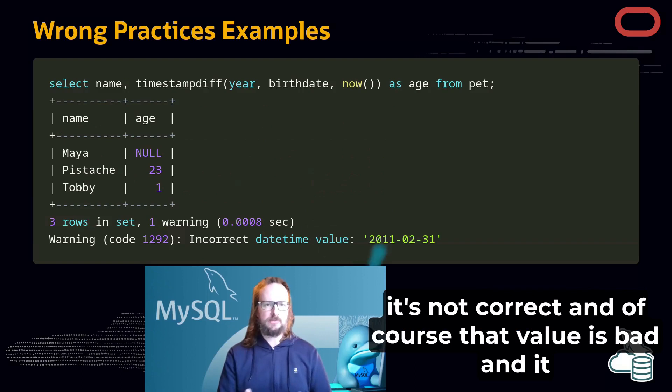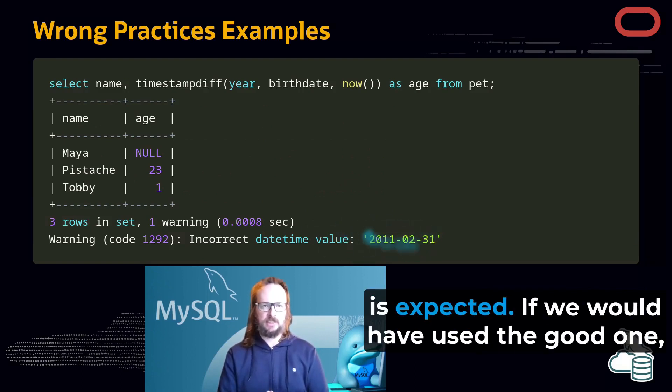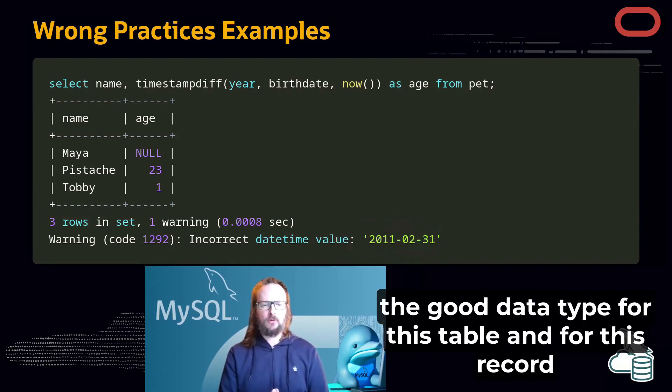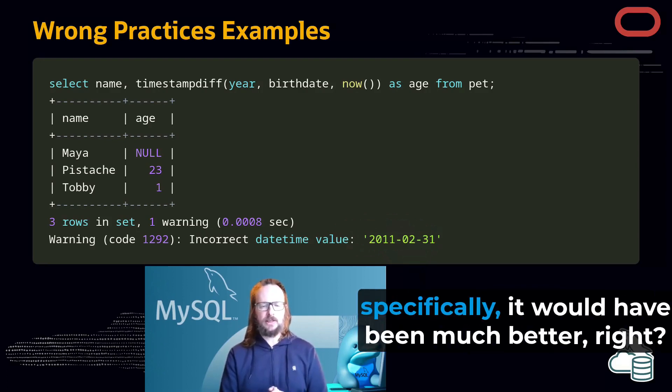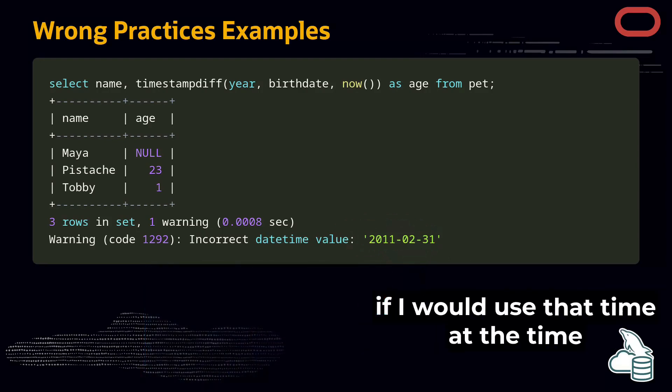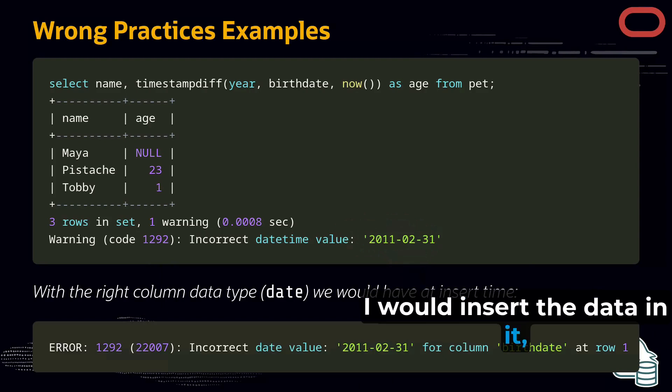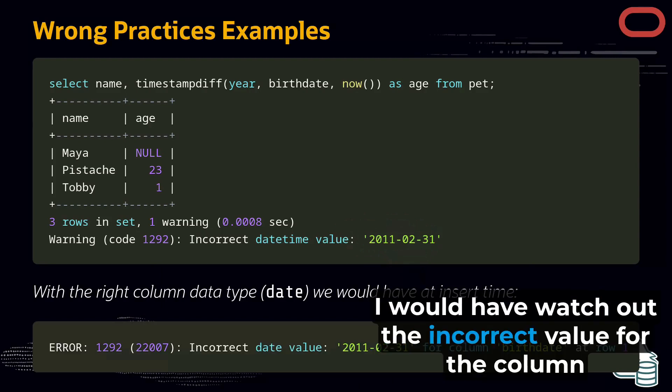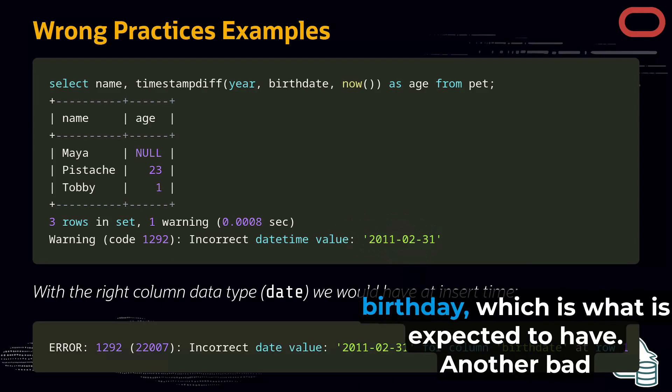Of course, that value is bad and it is expected. If we had used the correct data type for this table and for this record specifically, it would have been much better. For example, if we use datetime, at the time I insert the data, I would get a warning about the incorrect value for the column birthday, which is what is expected.